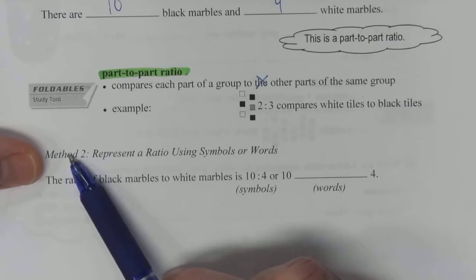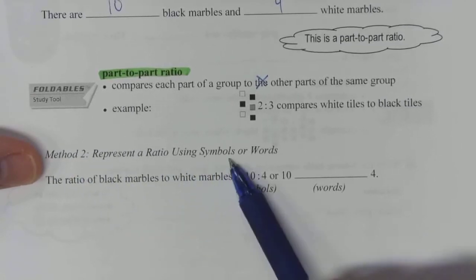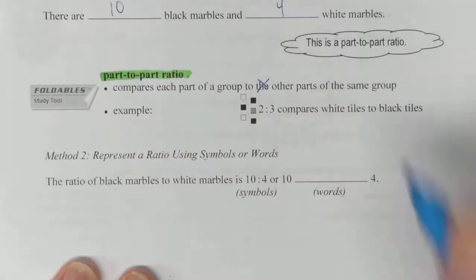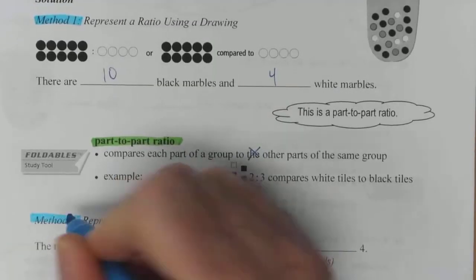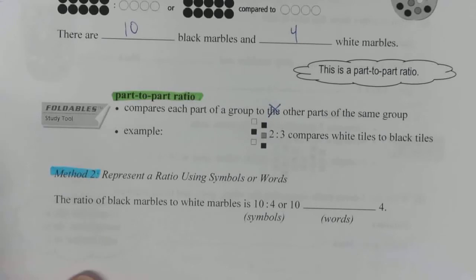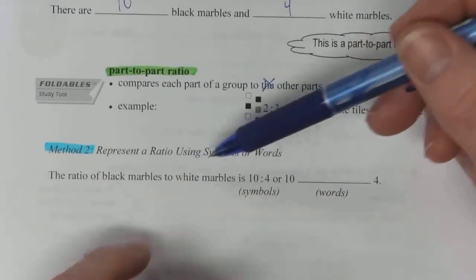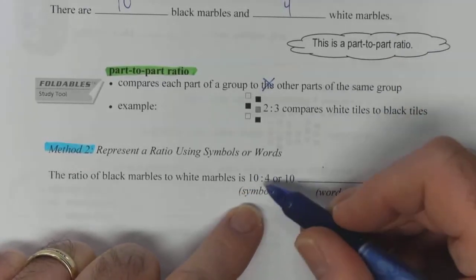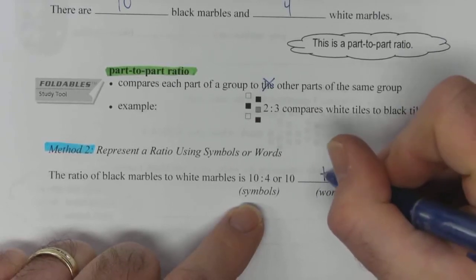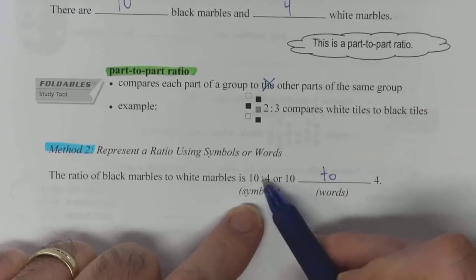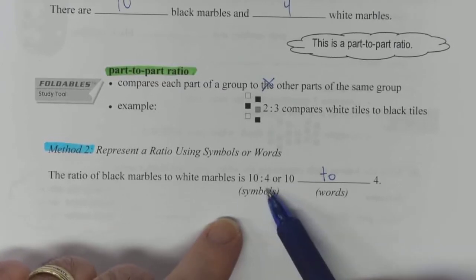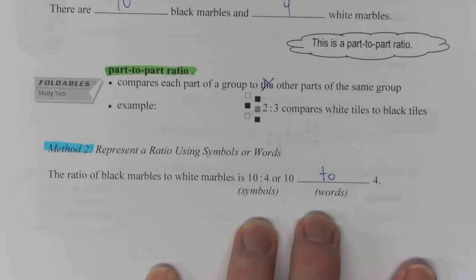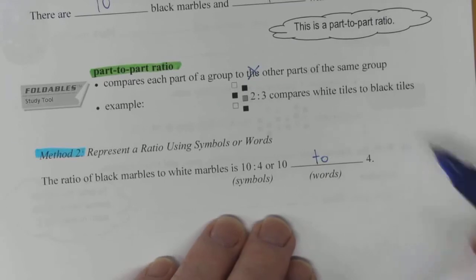So, for example, in this little drawing, two to three compares the white, two whites, to three blacks. So this is, again, another part-to-part. Method two. Rather than using a drawing, we can represent a ratio using symbols or words. Actually, here, let's try something different here. Method one, I highlighted, and then method two, I highlighted. So a ratio of black marbles to white marbles is 10 to 4, which is using symbols. Numbers are considered symbols. Or you can use words. Instead of the colon, we're using the word to. So 10 to 4 as a symbol or 10 to 4 using words. Either works. But that's another way to represent them. Rather than using pictures, you can use numbers.